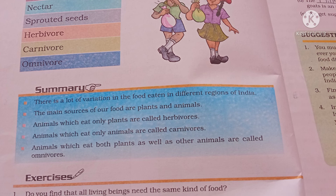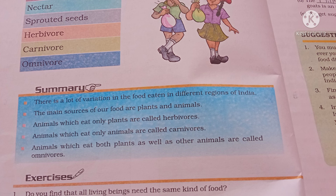We need to ensure that food is made easily available to everyone. Now let's do the exercises. Do all living beings need the same kind of food? No. Name 5 plants and their parts that we eat: radish — roots; carrot — roots; potato — stem; banana and apple — fruit; mustard — leaves and seeds used for mustard oil.